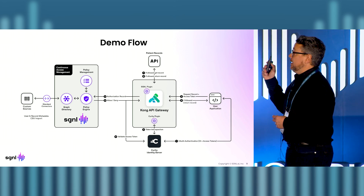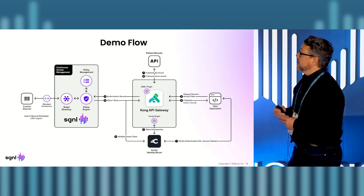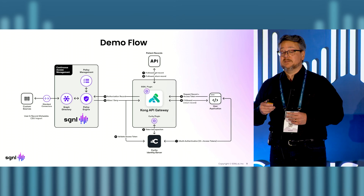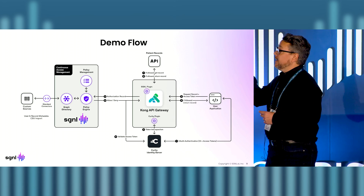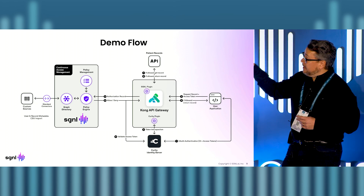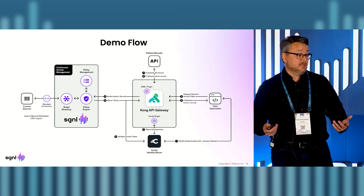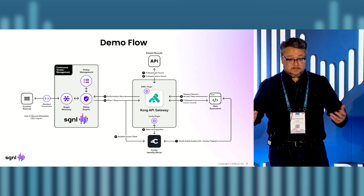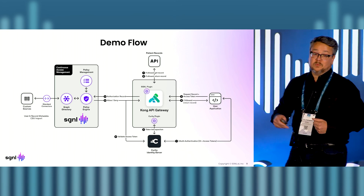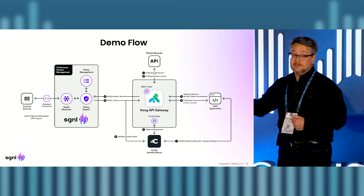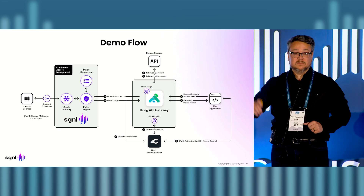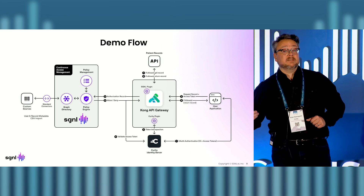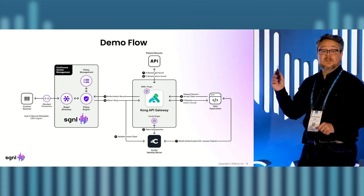The demo flow is quite simple. You authenticate with the identity provider — Curity — and send the code received back from the authentication process through the Kong API gateway. The Kong gateway gets that access token, and the Curity plugin introspects and validates it, making sure it's active. If it's not active, the request is automatically invalid. But what if the request is active but accessing the wrong patient's record? That's where the Signal plugin comes in — it calls Curity again, determines the user is Alice, then calls Signal and asks if Alice can access that particular patient record.